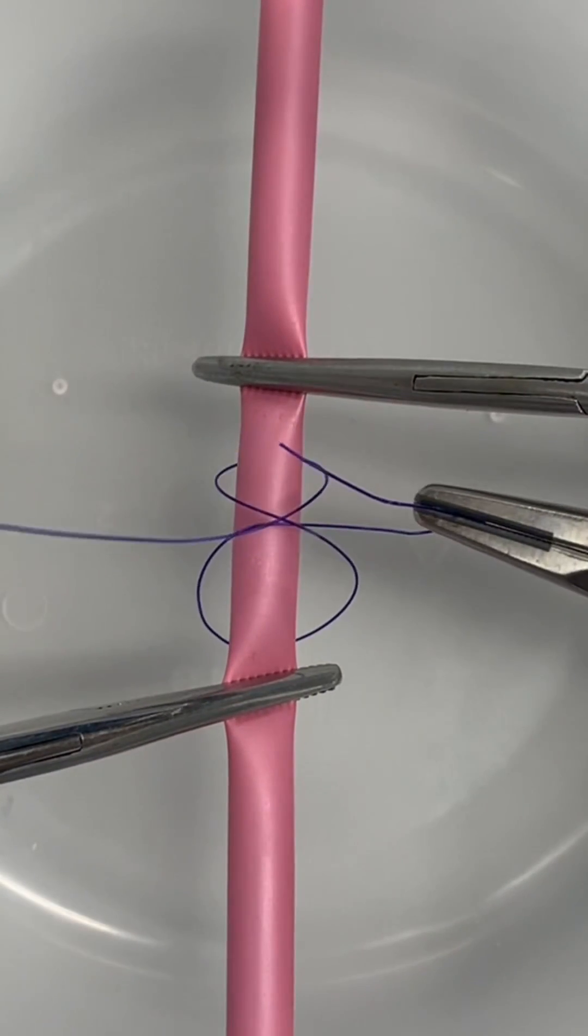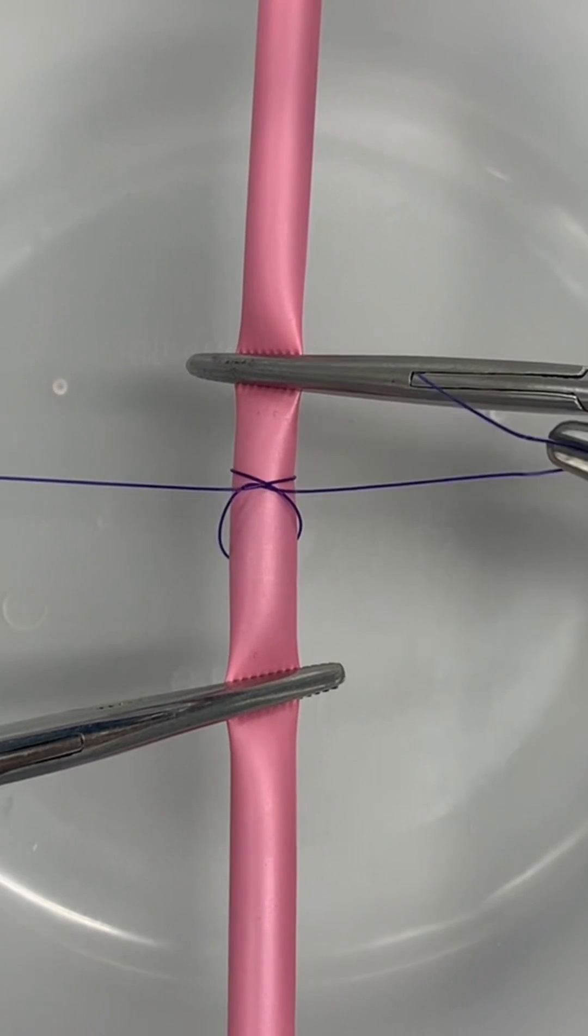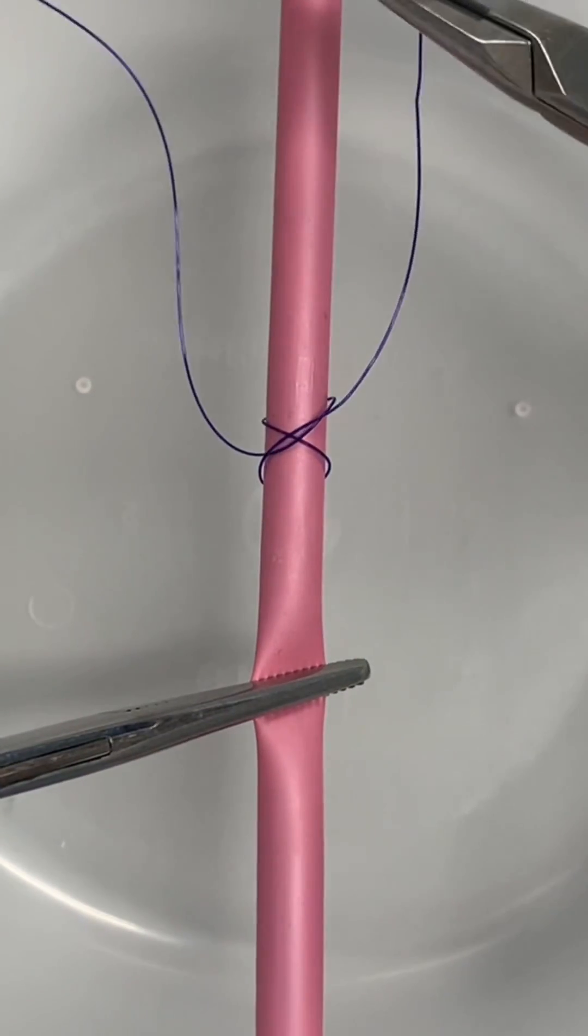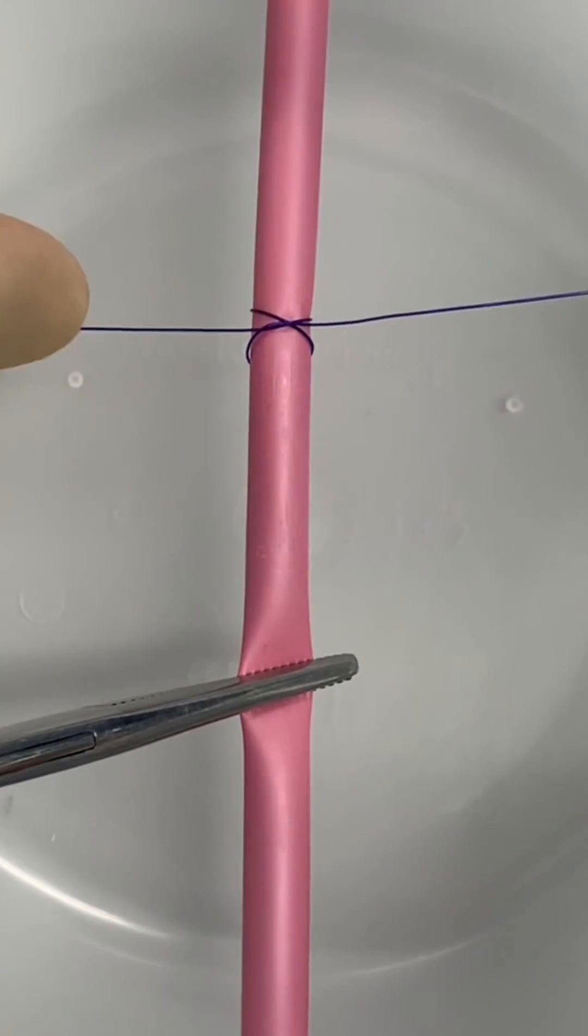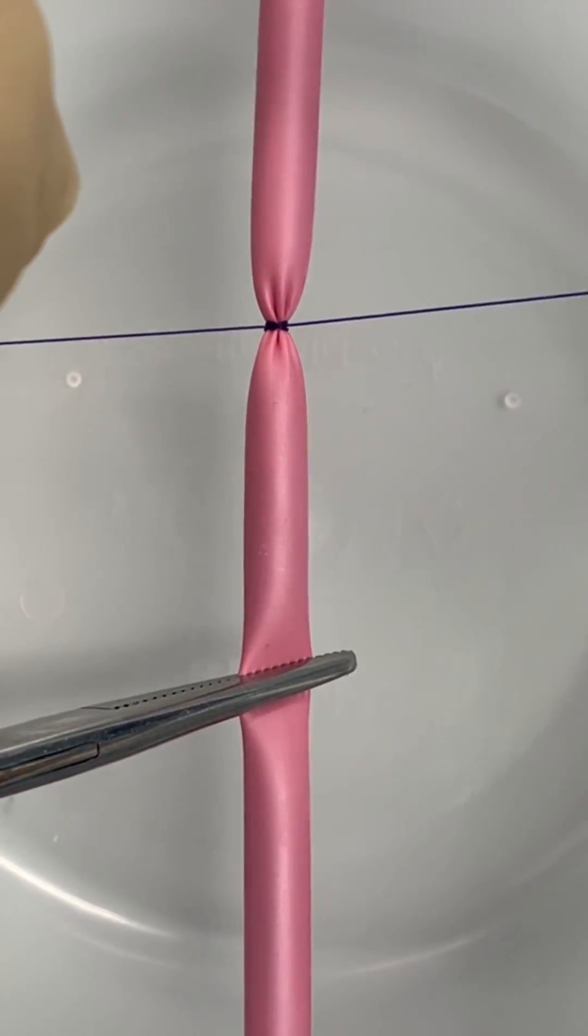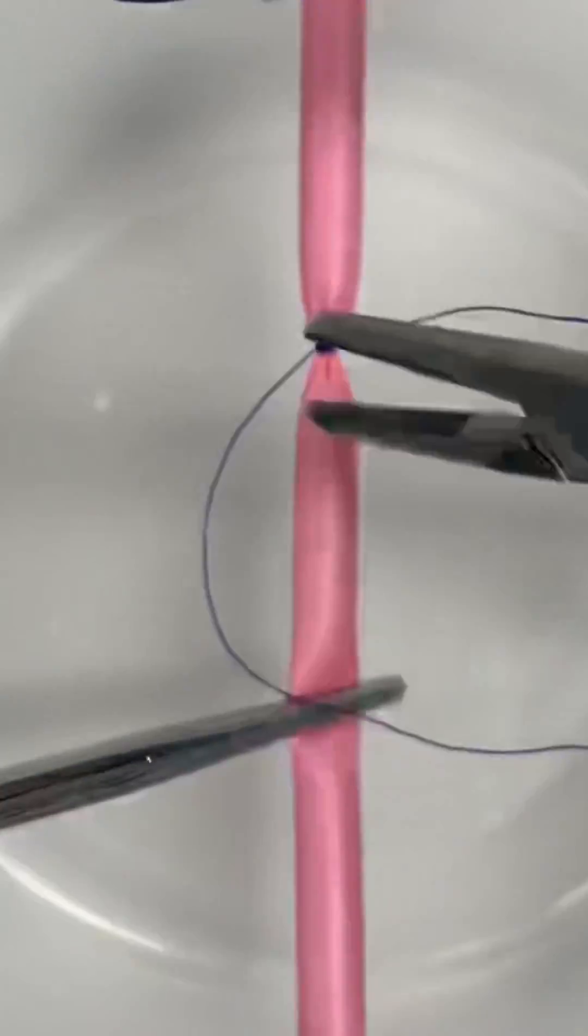Now you already have the constrictor knot, but don't tighten it just yet. Remove the more proximal clamp and slide the knot into the crush mark created by the clamp. Once it's in place, pull both ends equally to tighten and reinforce it with some square knots.